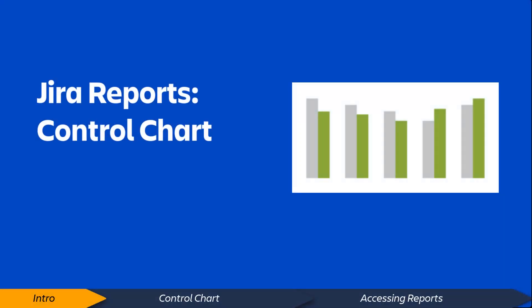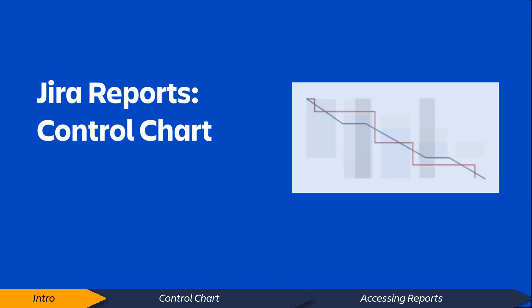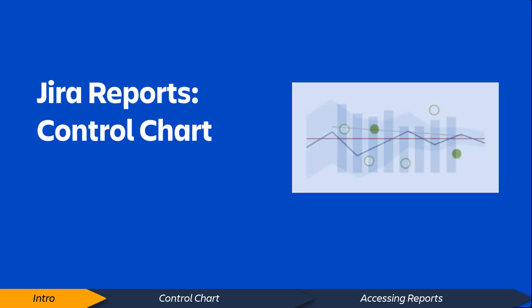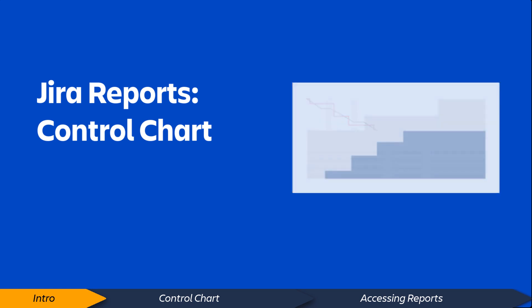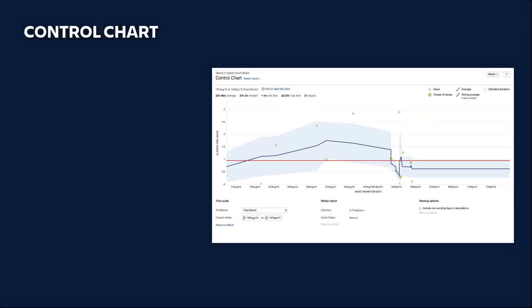Jira Software offers a variety of reports that provide valuable insight and information about your projects, people, and issues. In this video, we'll explore the Jira Software control chart. The control chart shows the cycle time or lead time for your product, version, or sprint.